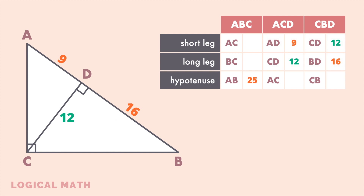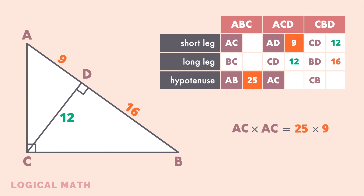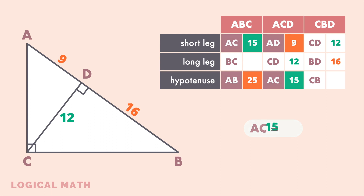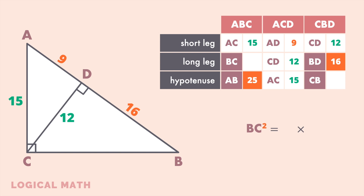We can find AC and BC using similarity, supposing that we only know the lengths of AD and BD. From similarity of triangles ABC and ACD, the corresponding proportion gives us AC equals 15. And finally, from similarity of triangles ABC and CBD, we get that the length of BC is equal to 20.